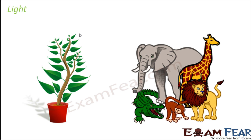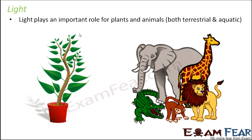Why do we need light? If you think of plants, we can very quickly say that yes, plants need light because plants perform photosynthesis in presence of light, and photosynthesis is the process by which they prepare their food. Animals also perform a lot of activities only in presence of light, and secondly, animals are also dependent on plants for their food — so animals are also dependent on light.